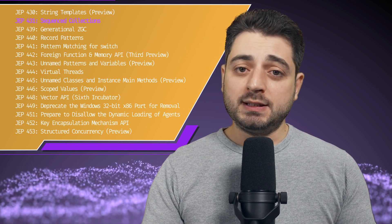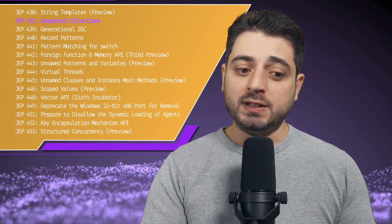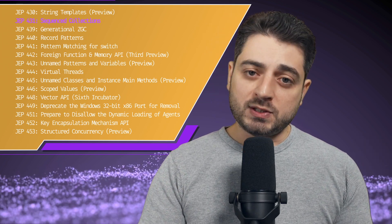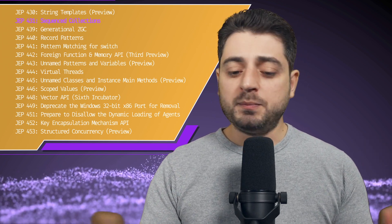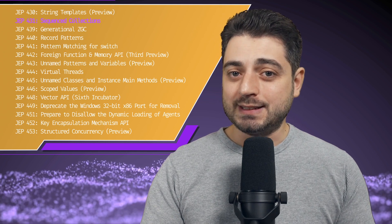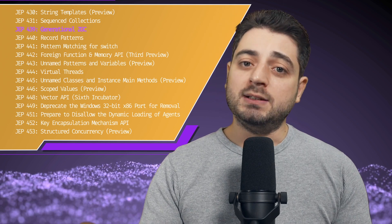Moving on — sequence collections, we can actually skip. Apparently Java's collections library didn't have interfaces for sequence collections. It's just the interfaces though, not the collections themselves, similarly to how we have IndexedSeq in Scala. The next one is generational ZGC, which is very relevant to us because we can use it in Scala today, especially since it's not in preview — it's totally stable.